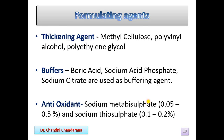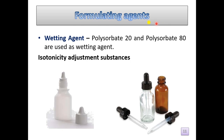The formulating agents for eye drops include: thickening agents such as methylcellulose, polyvinyl alcohol, or polyethylene glycol to increase viscosity; buffers such as boric acid, sodium acid phosphate, and sodium citrate; antioxidants such as sodium metabisulfite and sodium thiosulfate; wetting agents such as polysorbate 20 and polysorbate 80; and isotonicity adjustment substances. The container consists of a dropper and a bottle.